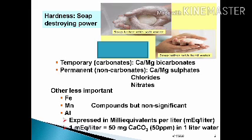Hardness is classified as carbonate and non-carbonate. Carbonate hardness, formerly designated as temporary hardness, is due to the presence of calcium and magnesium bicarbonate. Non-carbonate hardness, formerly designated as permanent hardness, is due to calcium and magnesium sulfates, chlorides, and nitrates. Hardness in water is expressed in terms of milliequivalents per liter. One milliequivalent per liter of hardness-producing ions is equal to 50 milligrams of calcium carbonate per liter.